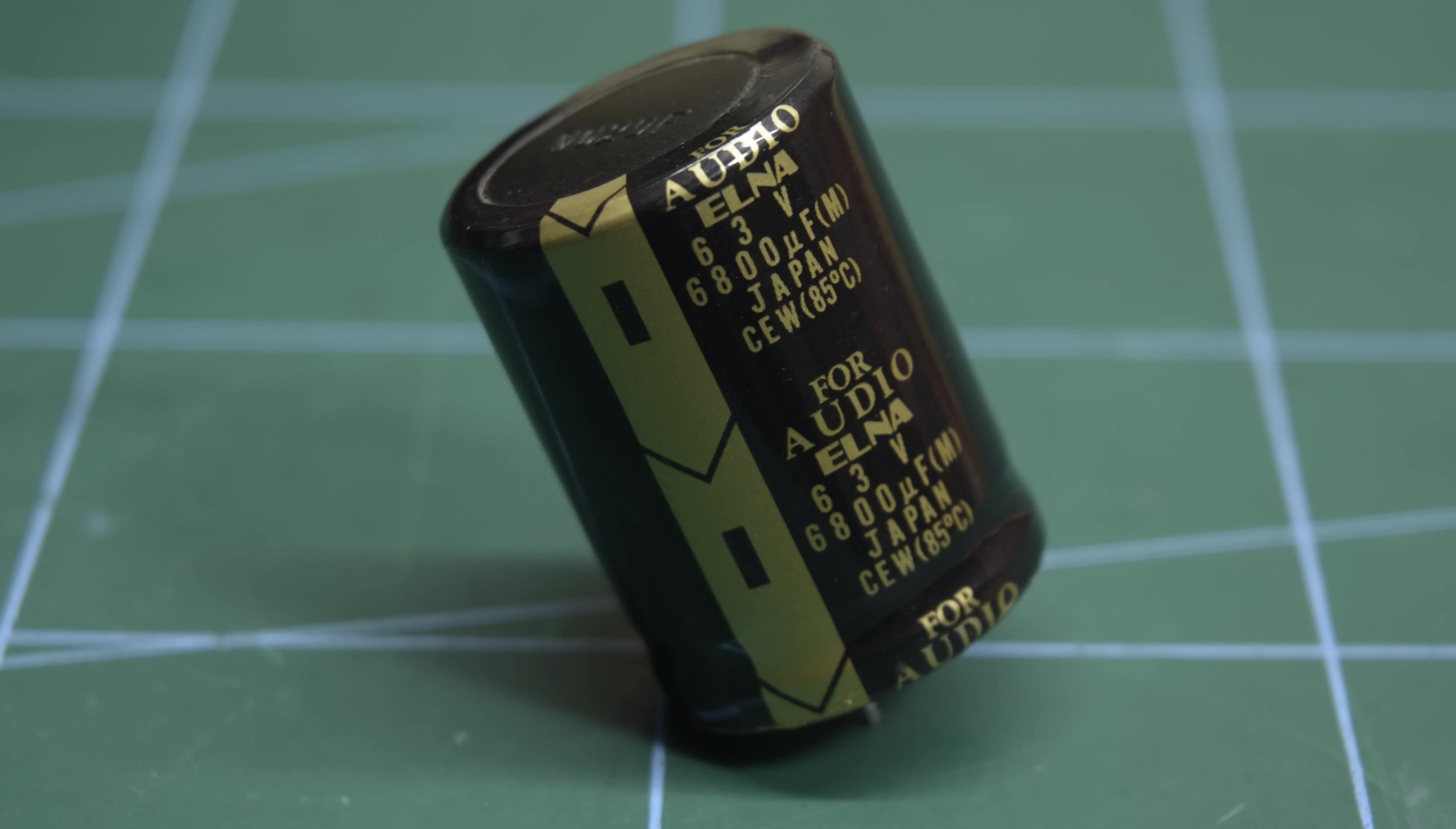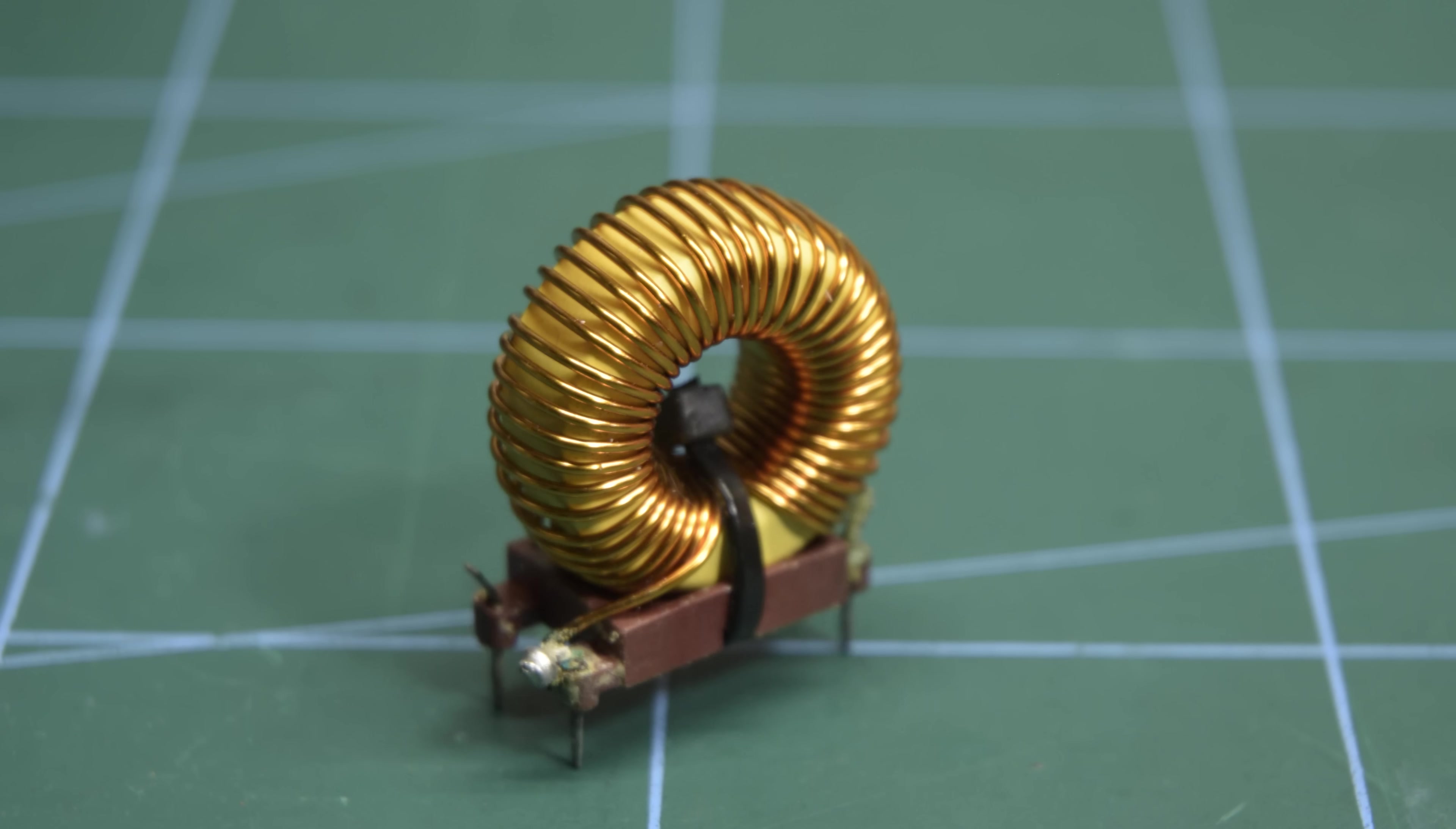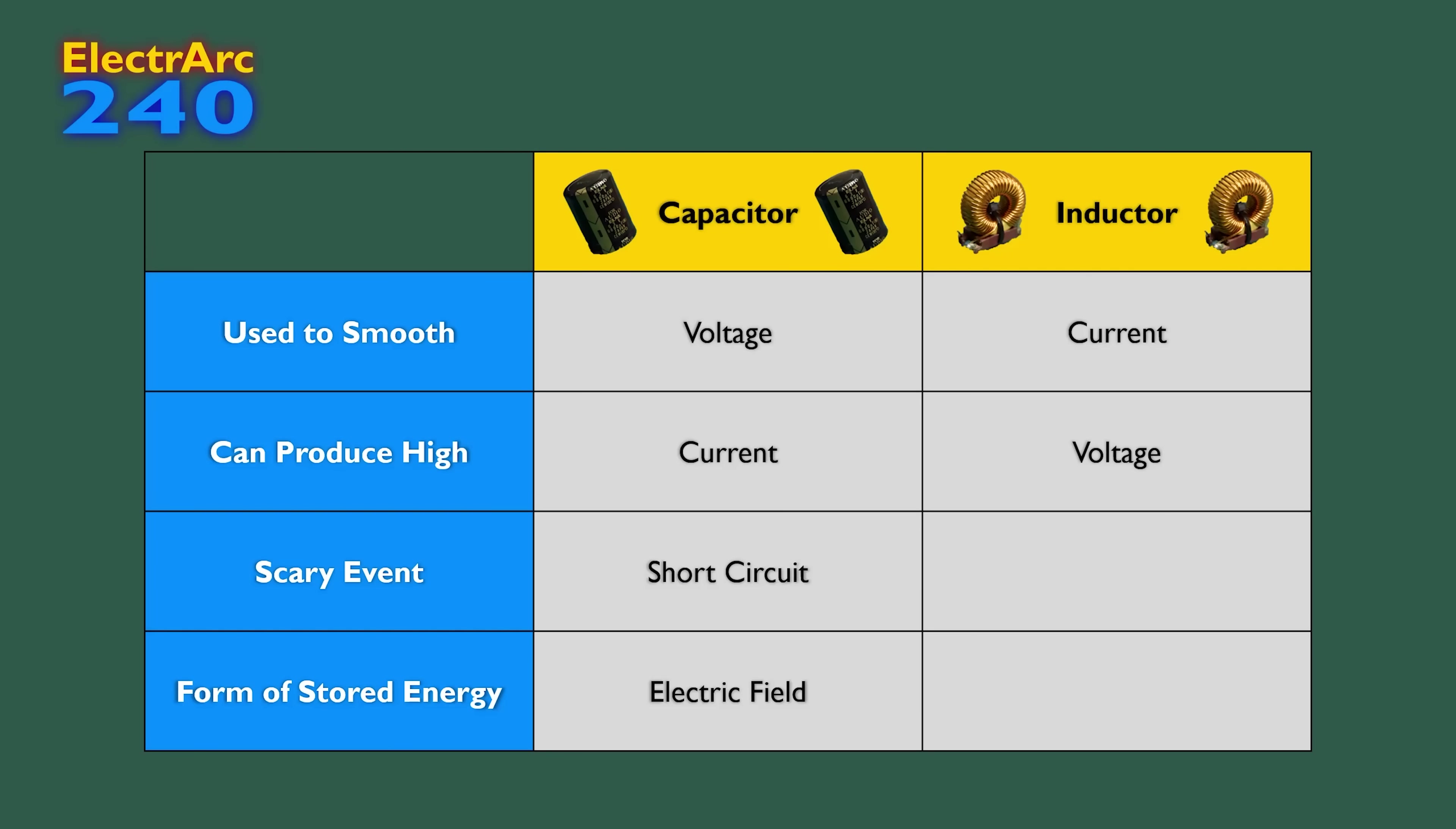As you can see, inductors and capacitors are perfectly opposite components, so if you understand one, you understand both. Just swap voltage for current, short circuit for open, and electric fields for magnetic fields.